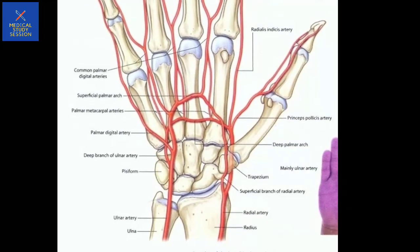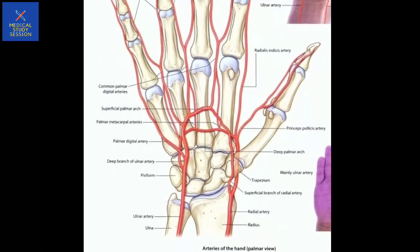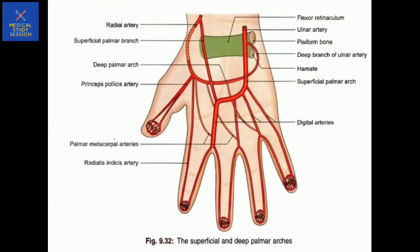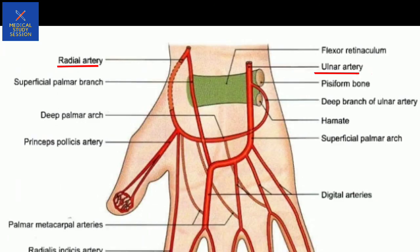The palmar and dorsal carpal branches form anastomoses around the wrist joint, formed by the radial and ulnar arteries together. The palmar carpal branch forms the palmar carpal arch, and the dorsal carpal branch forms the dorsal carpal arch. The dorsal carpal branch arises just above the pisiform bone and winds backward deep to the tendons into the dorsal carpal arch. This arch is formed medially by the dorsal carpal branch of the ulnar artery and laterally by the dorsal carpal branch of the radial artery.